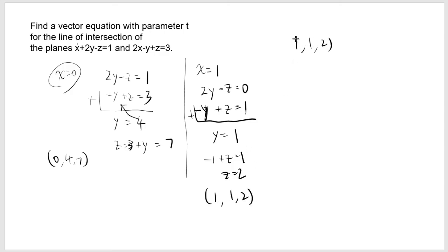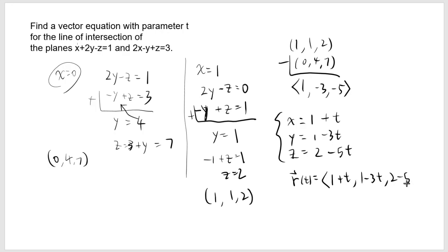And then you do the same exact procedure. Subtract. Get 1, negative 3, negative 5 as your direction vector. x, y, z would now be... Just take either one of these points. I'll choose this one. You could choose the other one too. 1, 1, 2. And then you get 1t minus 3t minus 5t. And that's it. Or written in the vector form it would be 1 plus t, 1 minus 3t, 2 minus 5t.